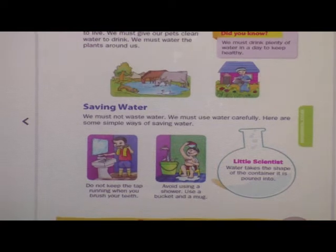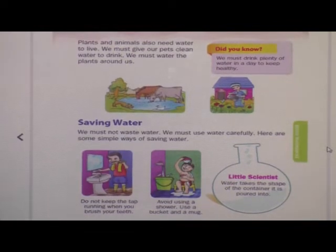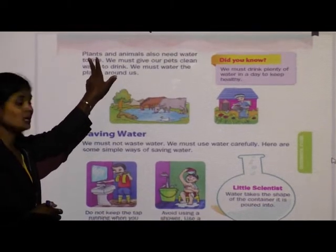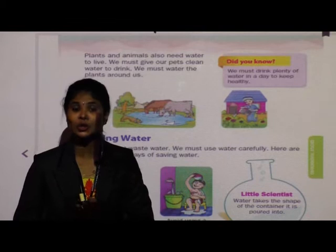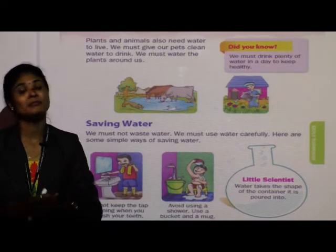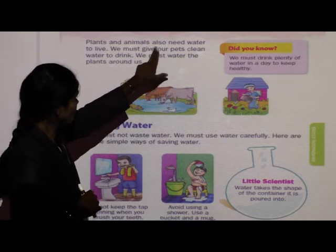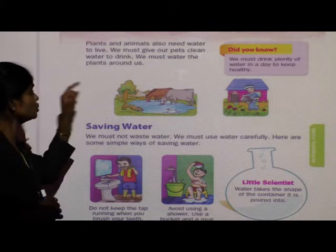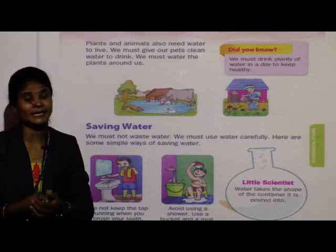Now everyone come to page number 159. Plants and animals also need water to live. Plants, animals, and birds are living things and they need water to live. Not a single living thing can survive without water on earth. Water is the most important thing for living things. We must give our pets clean water to drink, and we should also drink clean water.